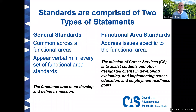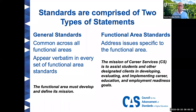An example is that the functional area must develop and define its mission. It doesn't matter if that's career services, assessment programs, or trio programs — regardless of the functional area, that area should develop and define its mission. And then within those 12 sections, in addition to the general standards, we have functional area standards, which are specific to that functional area. Here's an example of a mission-related functional area standard for career services. So sets of standards have both these general standards and these functional area standards.